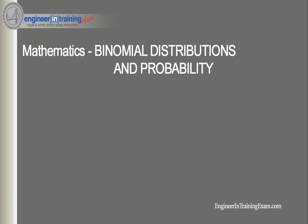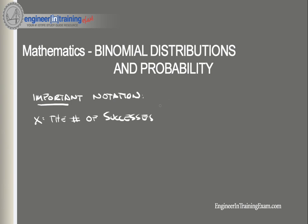The following notation is important when talking about binomial probability. x is the number of successes that result from the binomial experiment. n is the number of trials. p is the probability of success on an individual trial. q, which equals one minus p, is the probability of failure on an individual trial.